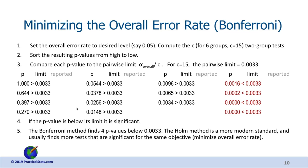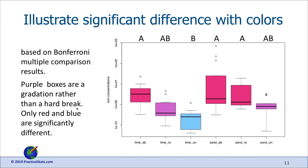A picture of those results shows that three of the four significant differences are between the red boxes at the top and the blue box at the bottom. The purple blends in between and is not significantly different from adjacent groups — blue is not different from purple, red is not different from purple, but blue is different from red. There is also one purple-to-blue difference that is significant, giving four total by Bonferroni.